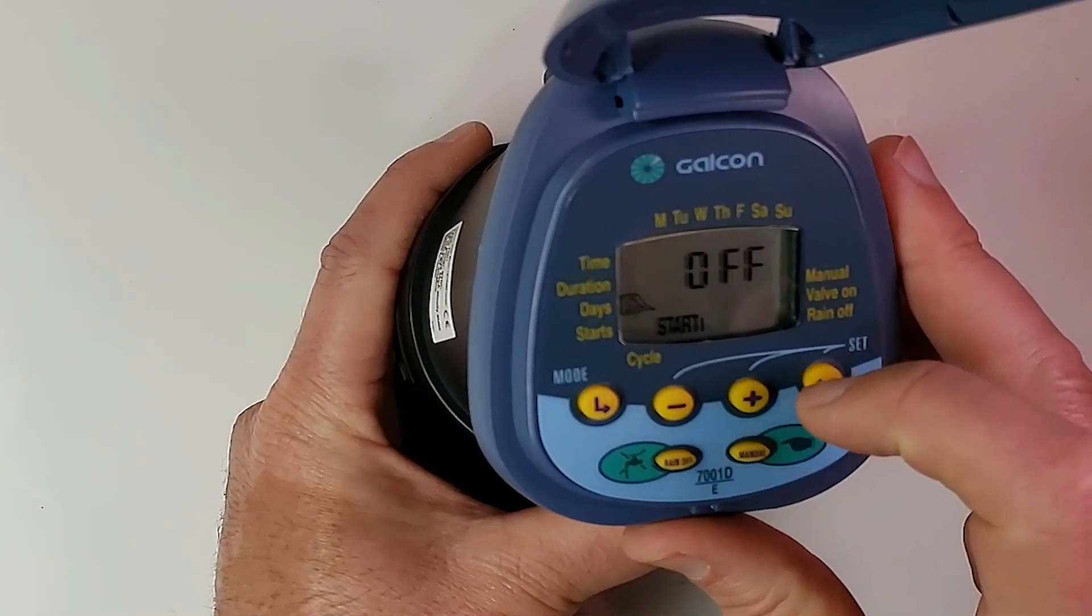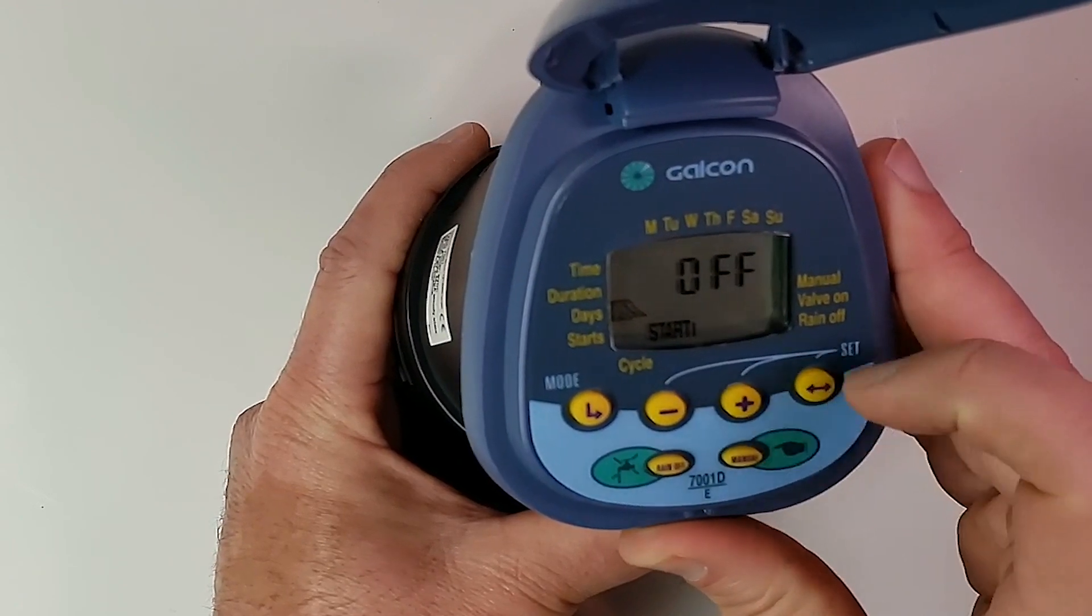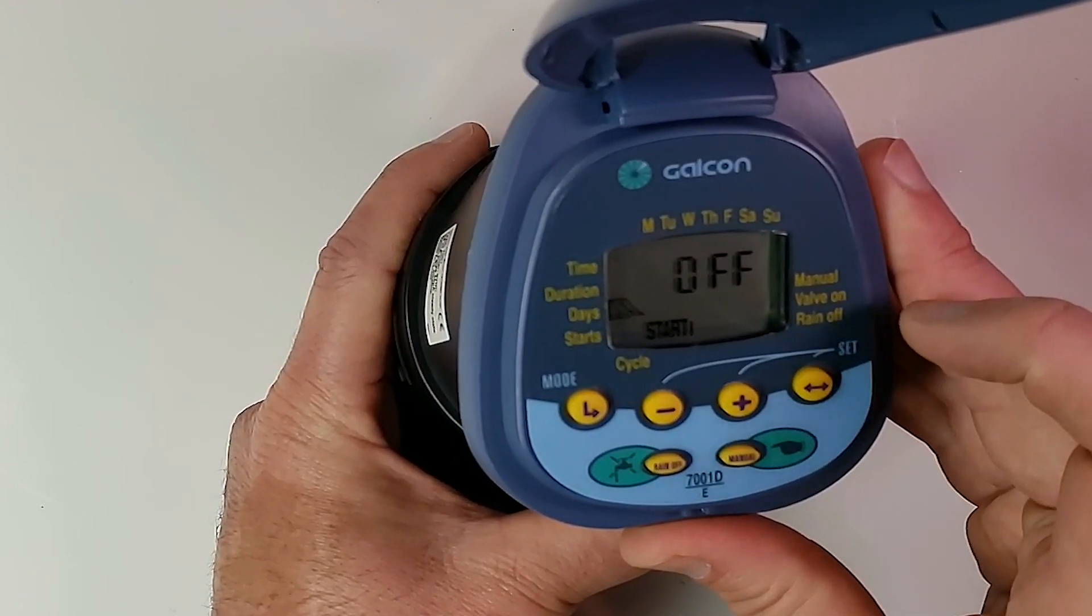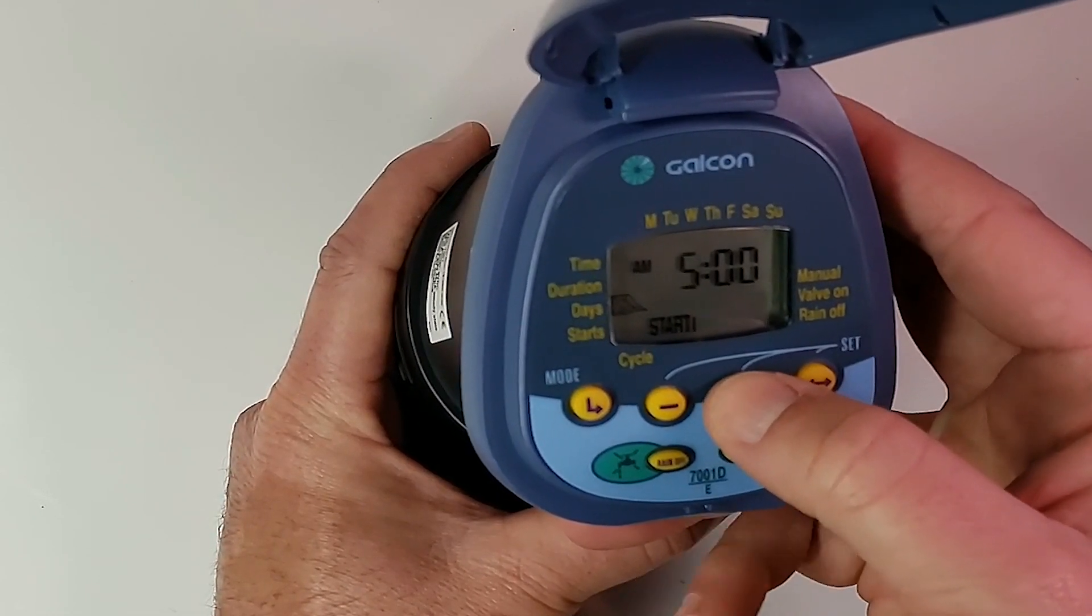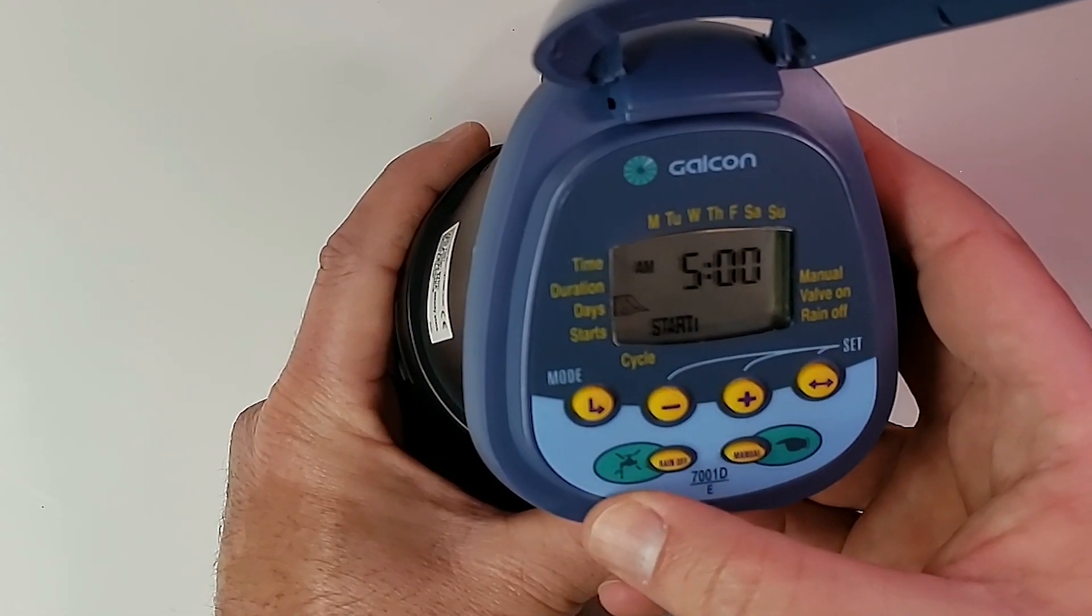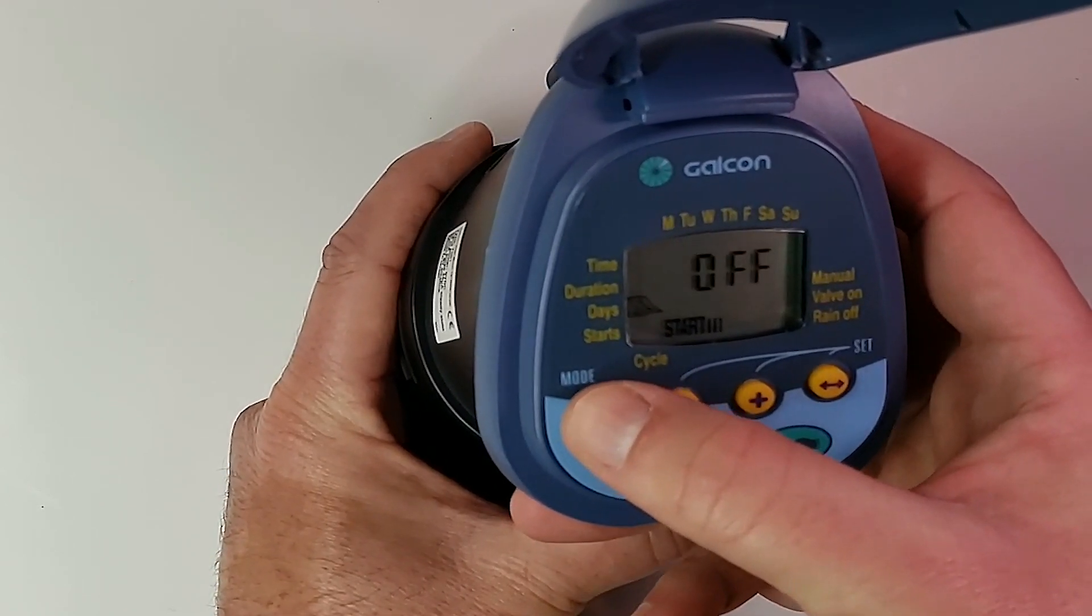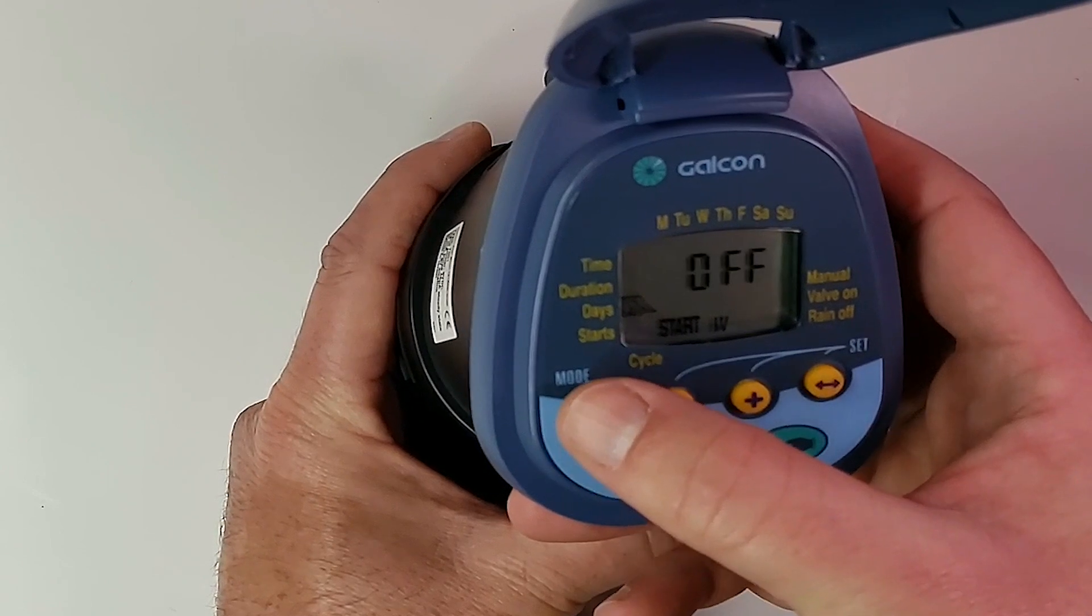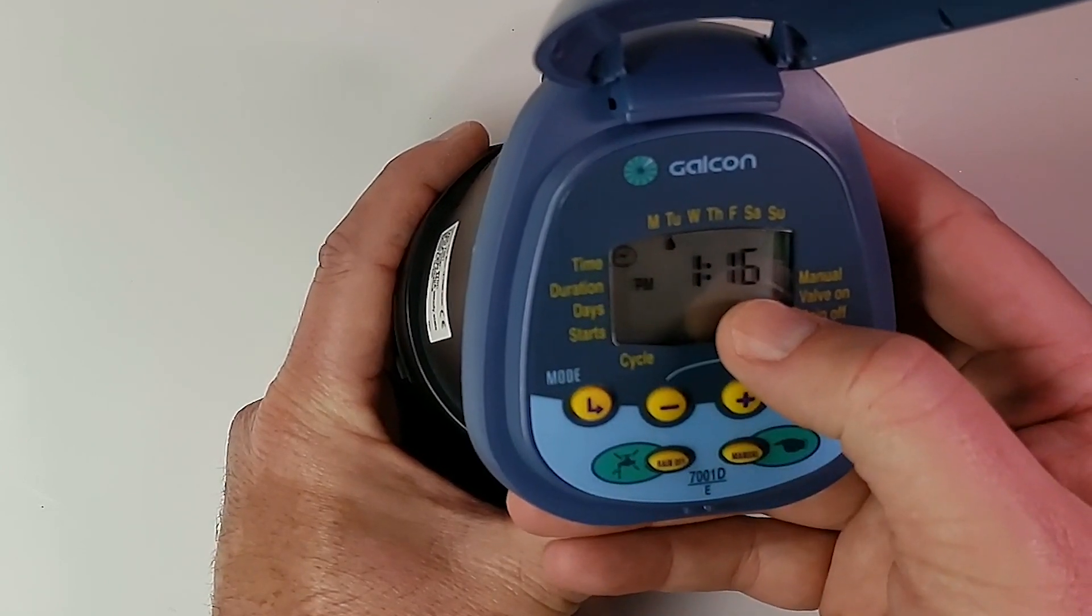Now our start time, we're going to run it at 5 AM every morning. So we're going to hit the set button and plus until we see 5 AM. We don't need start time two, start time three, or start time four, so we're just going to go ahead and hit enter. And now it's all set up.